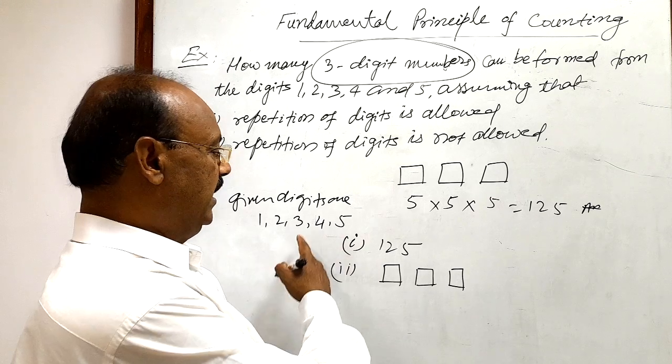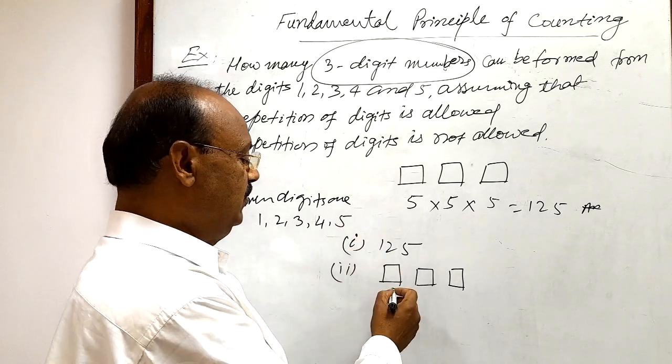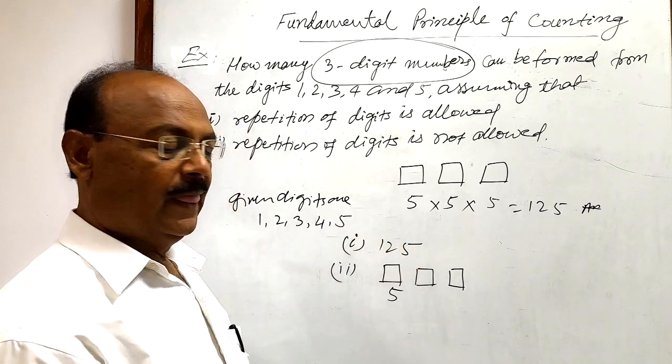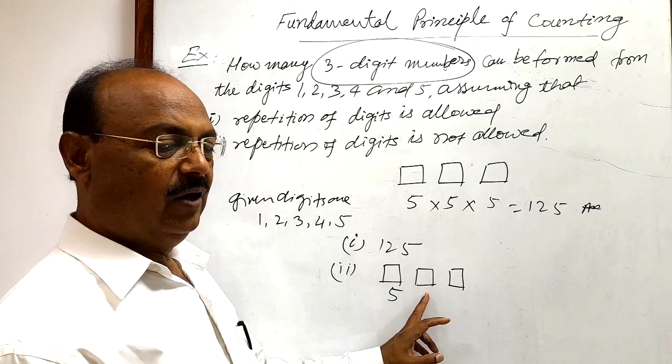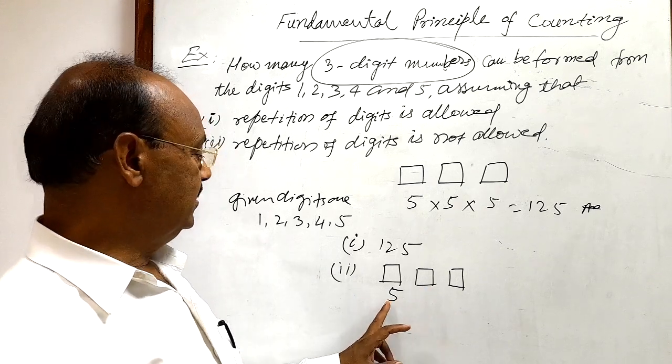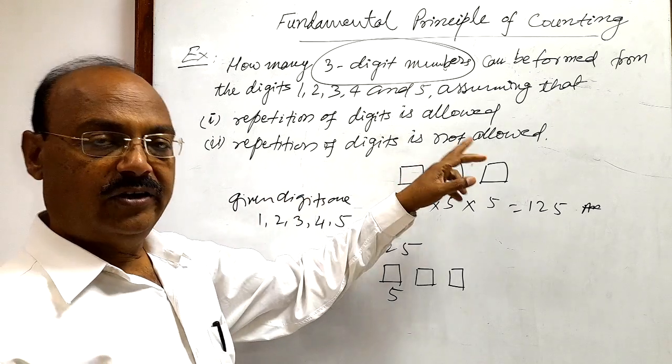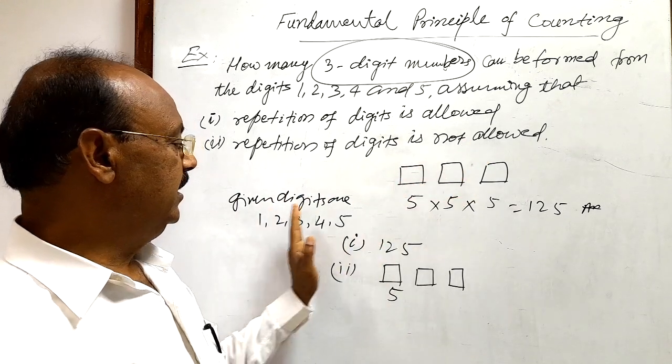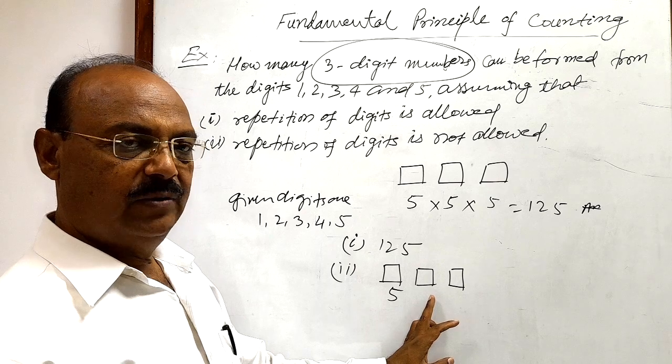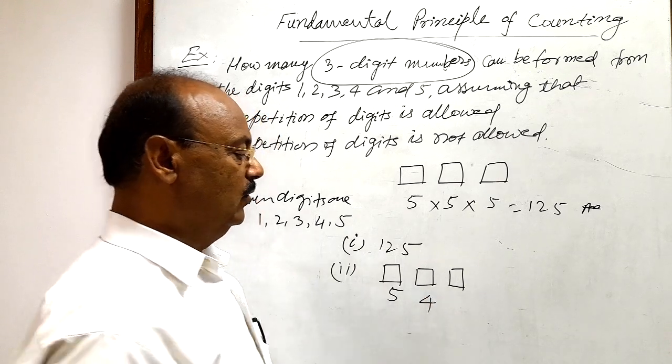We are having five digits, so we can take any out of these five, so in five ways. And this second place can be filled in how many ways? We have already selected one digit out of five, and repetition of digit is not allowed. So naturally, remaining digits that we can select for this place will be four, and for this place, remaining digits are three.